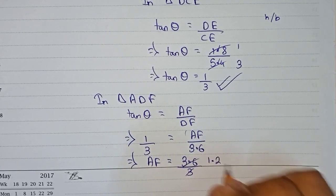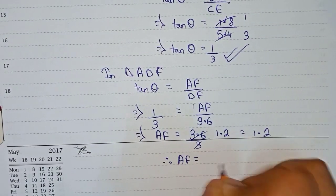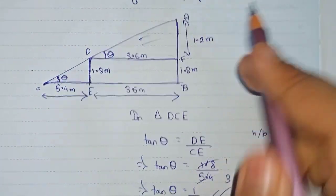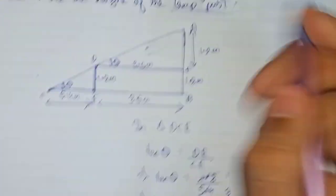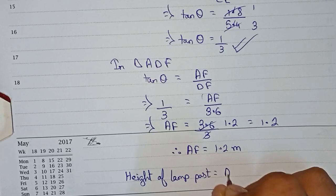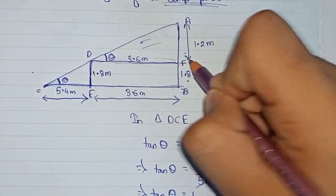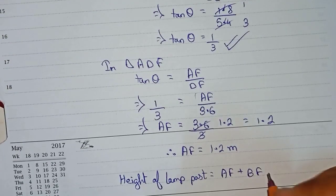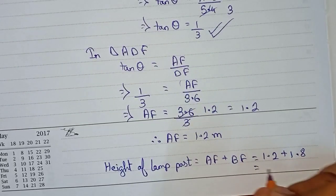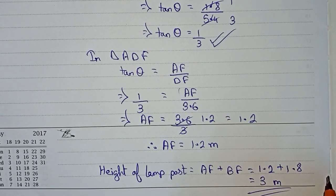Simplifying: AF equals 3.6 divided by 3, which equals 1.2 meter. So AF equals 1.2 meter. Now we can find the height of the lamp post. Height of lamp post equals AF plus BF, since AF and BF together make AB. So it equals 1.2 plus 1.8, which equals 3 meter. That is the final answer. Thanks for watching this video — please subscribe to my channel for more solutions like this.